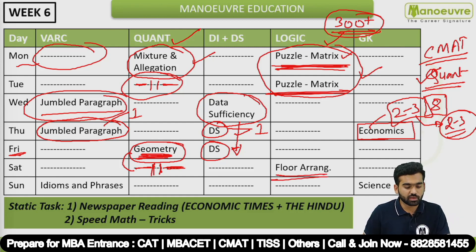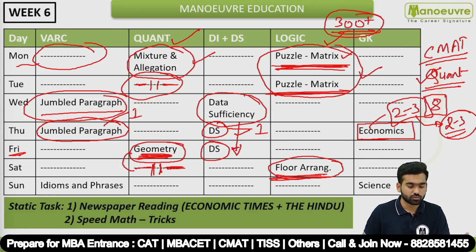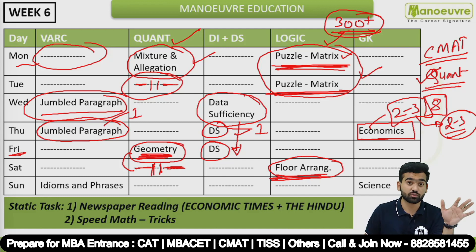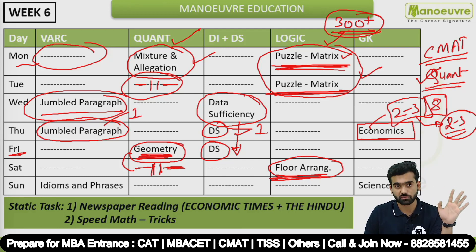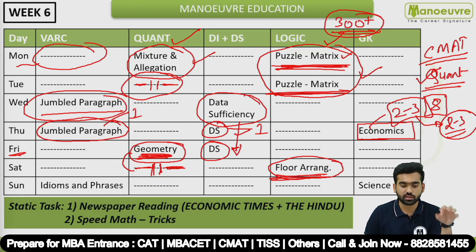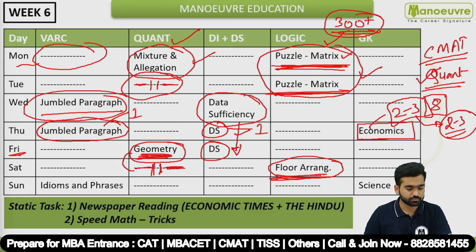On Saturday, focus on Flow Arrangement questions — these are quite easy. Solve easy to moderate level questions only. Do not waste time on difficult level questions, as CMAT typically has easy to moderate level questions in the exam.